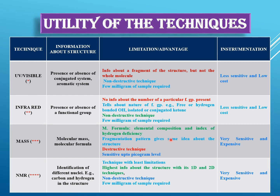UV-visible spectroscopy gives you information about a fragment of the structure, specifically a conjugated system which leads to a particular pattern or peak in the UV-visible spectrum, but it will not tell you about the whole molecule. It's a non-destructive technique, meaning it will not destroy your sample, so you can recover it after the experiment, and you need only a few milligrams of sample.